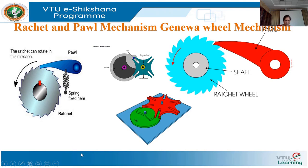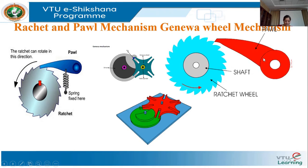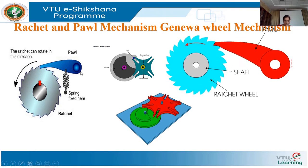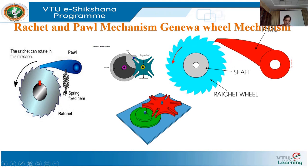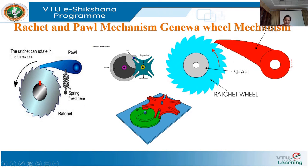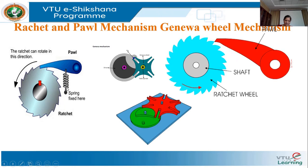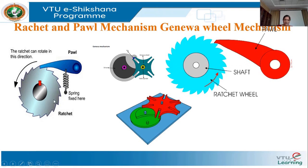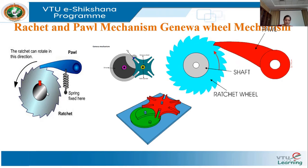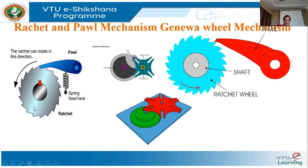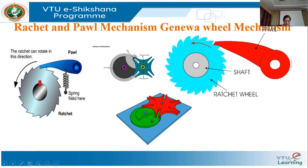The ratchet mechanism produces intermittent circular motion from an oscillating or reciprocating member. The mechanism consists of a ratchet wheel and a pawl. A spring mechanism is used to raise the pawl. The pawl drives the wheel counterclockwise, and as the pawl lever is lowered, the pawl slides over the ratchet teeth.